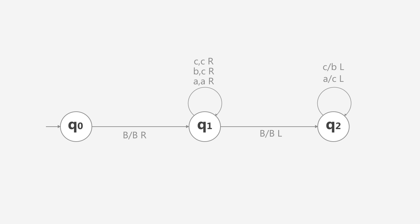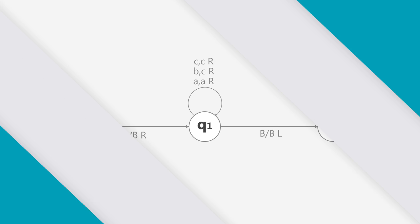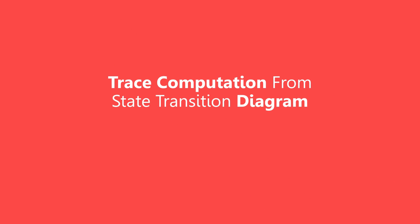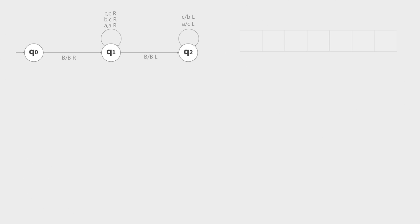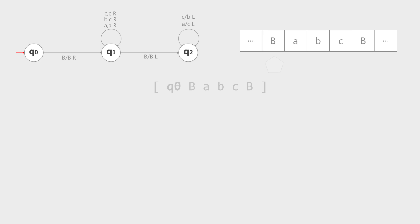Here is the final state diagram. Next, we will trace the computation from our state diagram. We will use the state diagram from before and trace the computation of the string: blank, A, B, C, and blank. Our indicator will start at the first tape position with Q0, read blank, and move to Q1 with the output of blank.